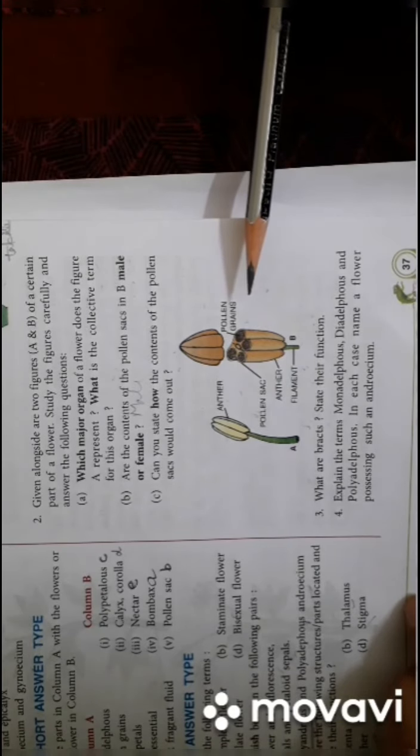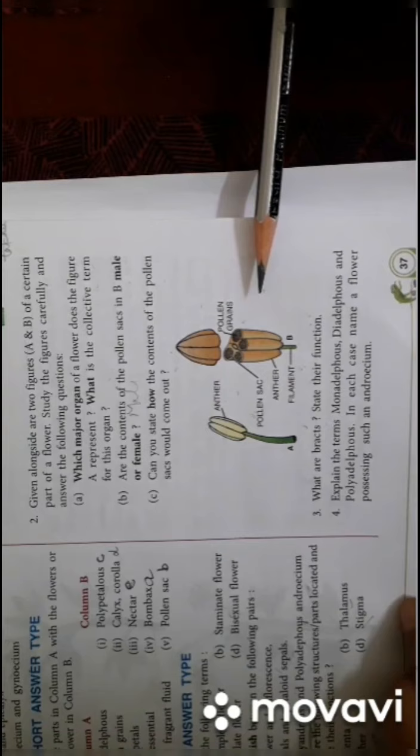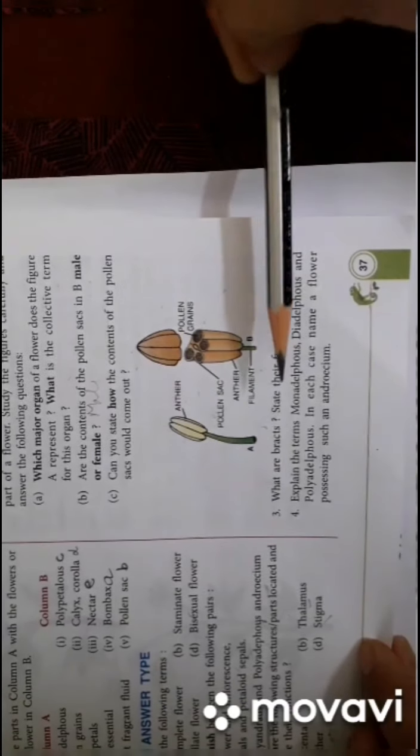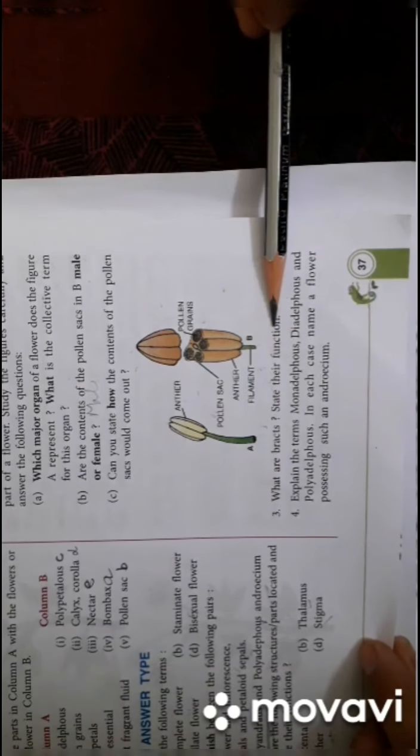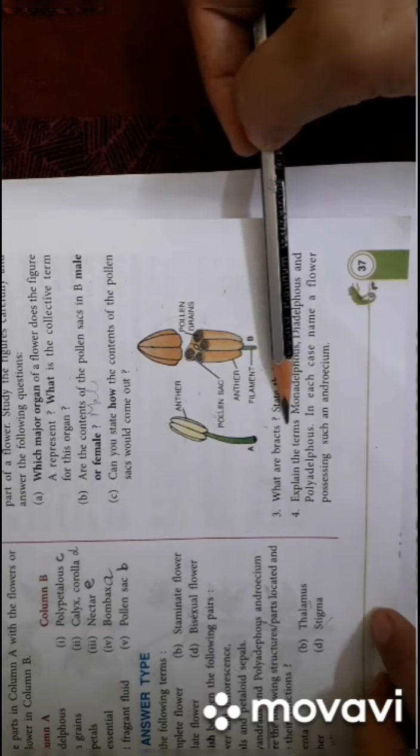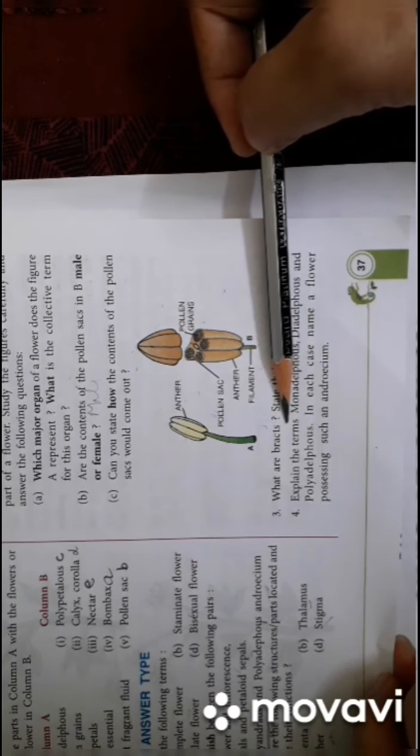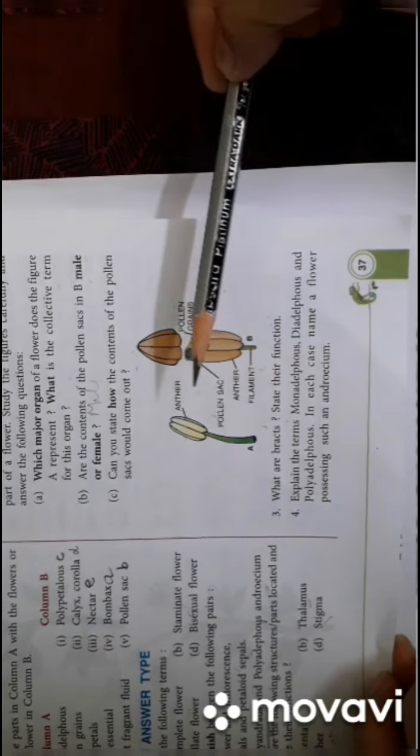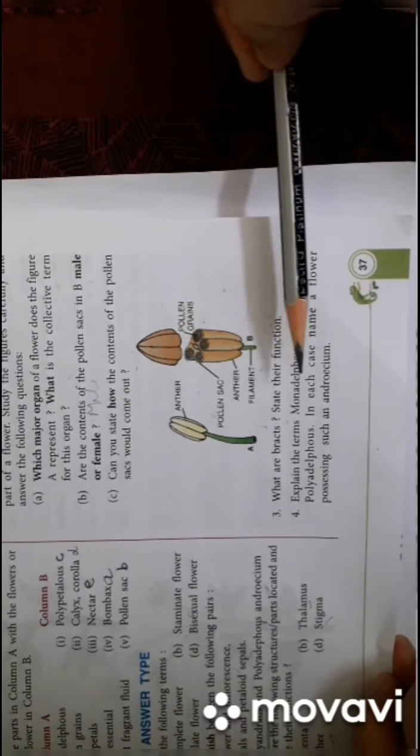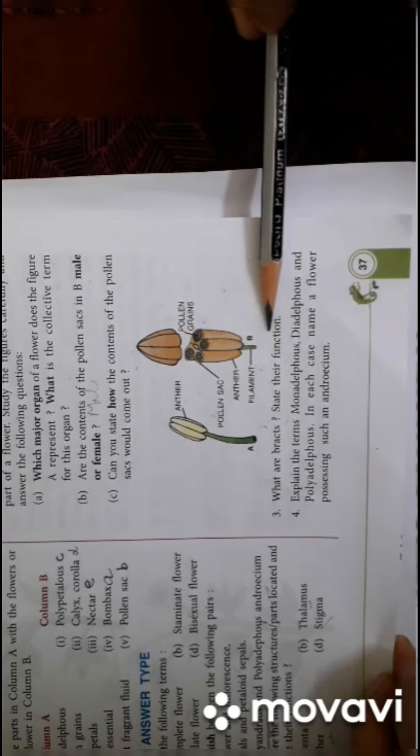What are bracts? State their functions. Bracts are the modified leaf-like structures which help or which attract and help in pollination. State the function - it helps in pollination.